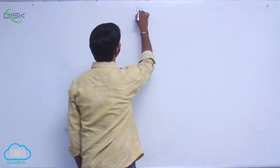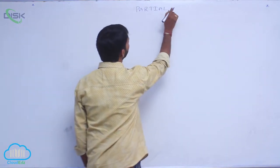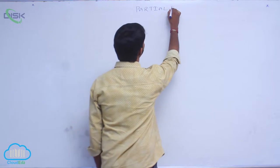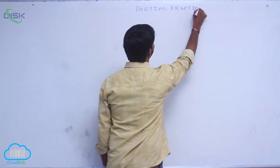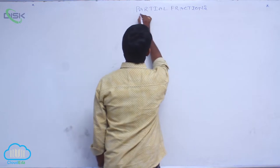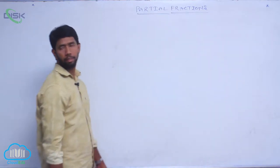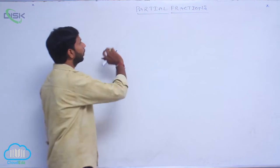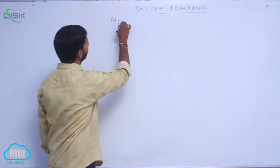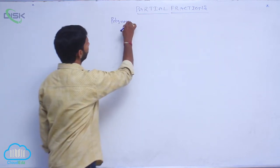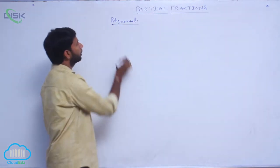The chapter is partial fractions. First of all, what is the definition of a polynomial?